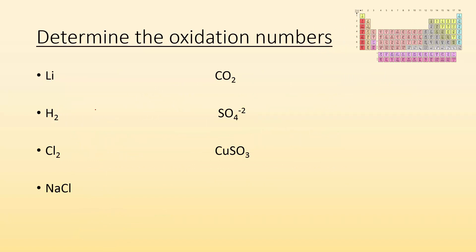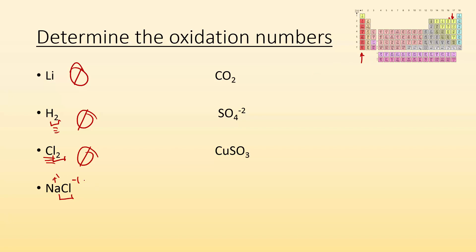Let's do some practice — pause it if you want to try it yourself. Lithium all by itself: oxidation number is zero. H₂ — another element in its elemental form, don't let the two throw you off — it's still just hydrogen, so it's zero. Cl₂, same deal — still just chlorine in its elemental form, so its oxidation number is zero. NaCl: Cl is in group 17, so like fluorine it's minus one. Sodium is in group one and follows the plus one pattern, so sodium is plus one. The whole thing equals zero — checks out.